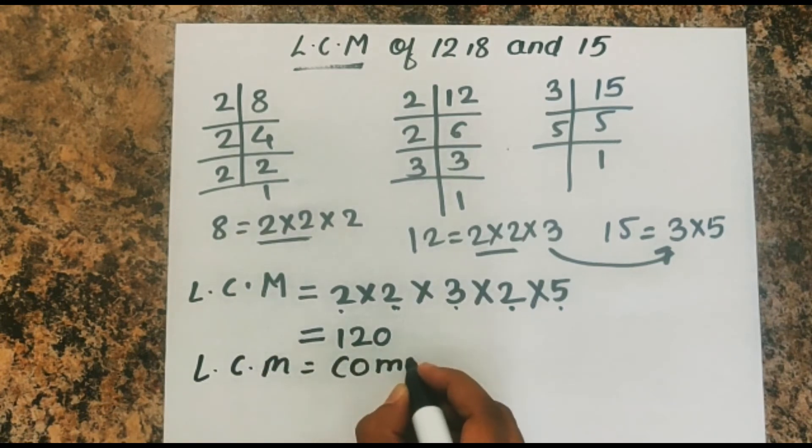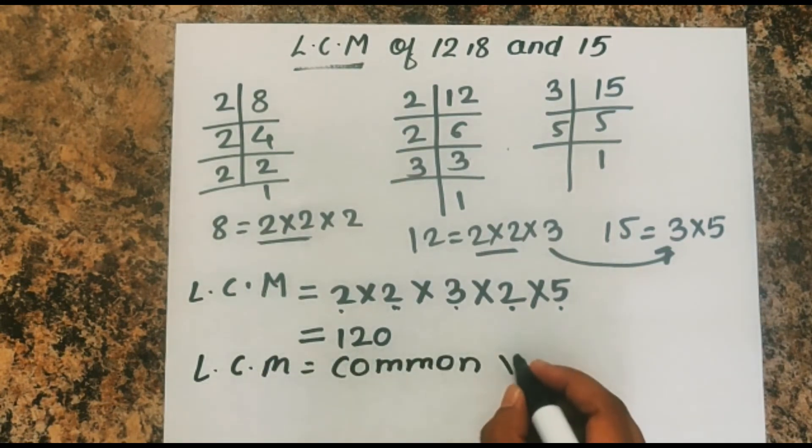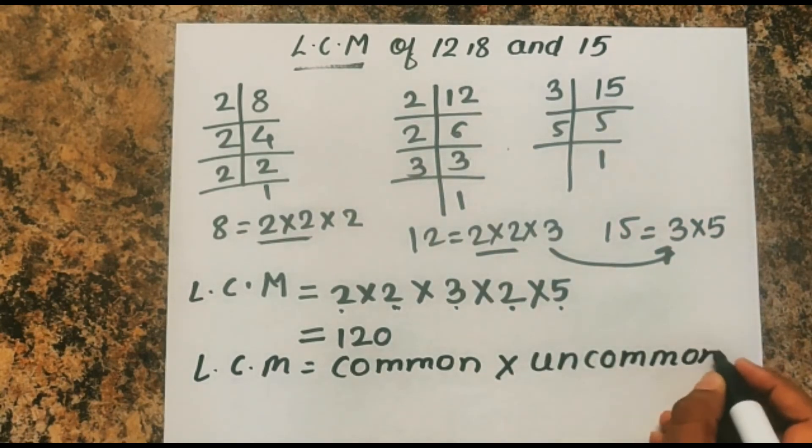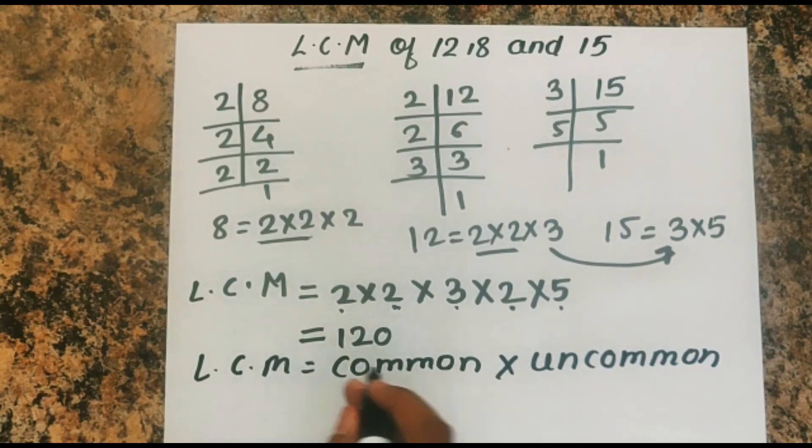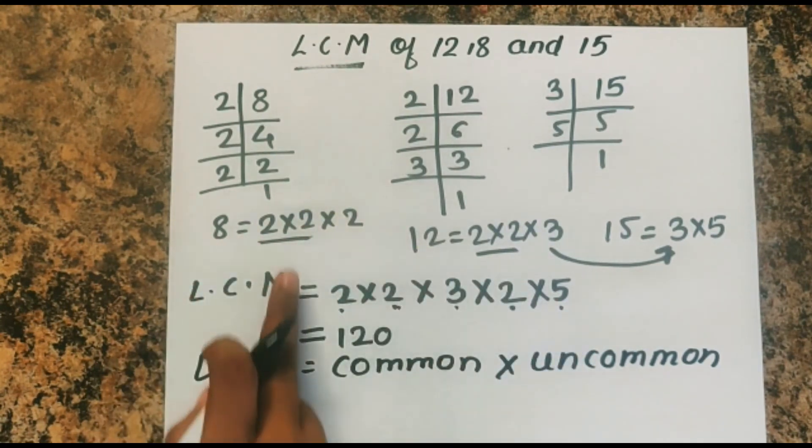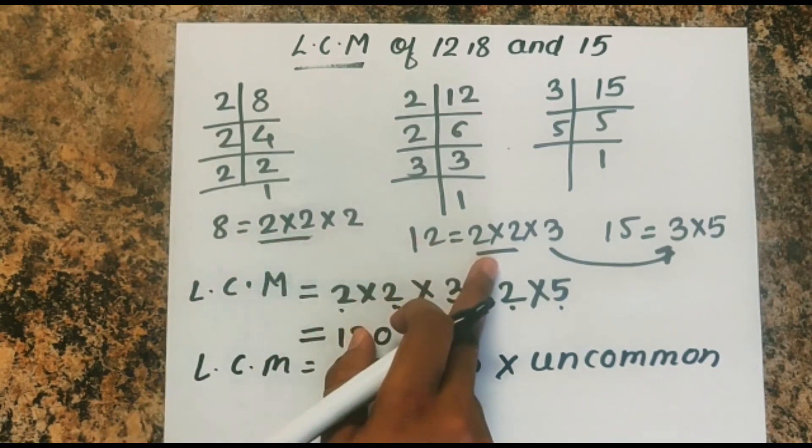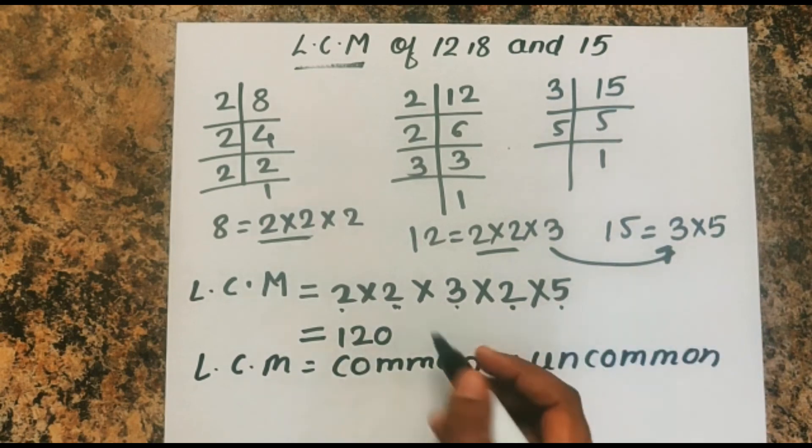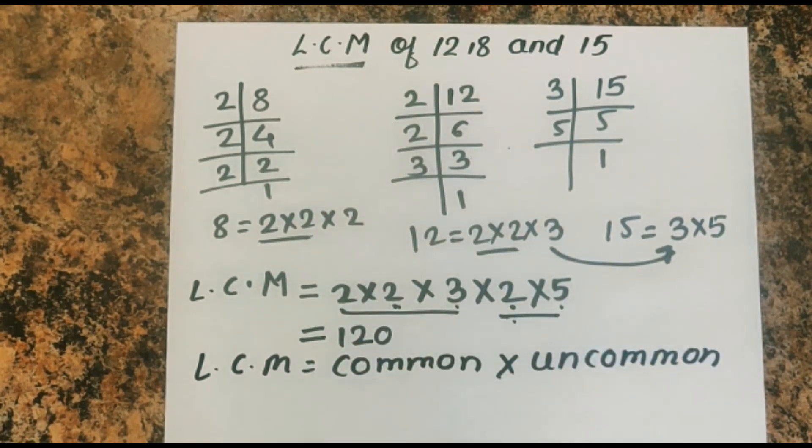LCM means common multiply by uncommon. Considering pairs of numbers, there was a common factor of 2 into 2 in 8 and 12, and then 3 in 12 and 15. So these were the common factors, and the rest are uncommon.